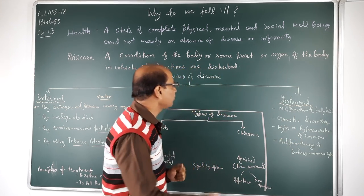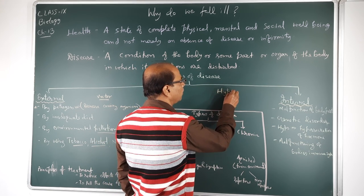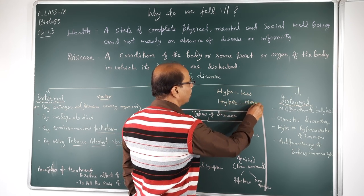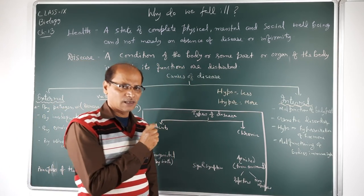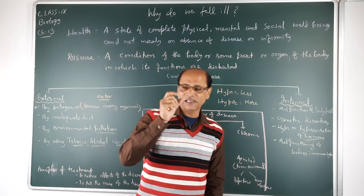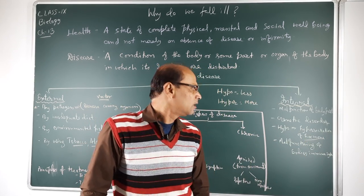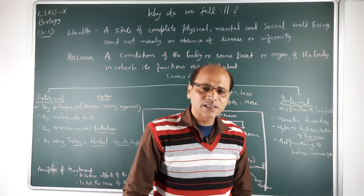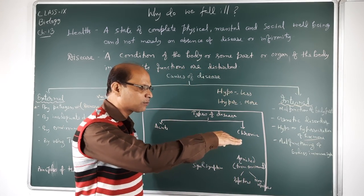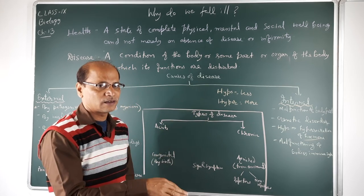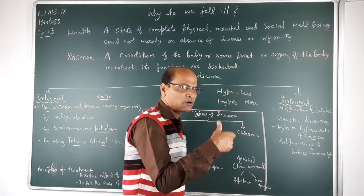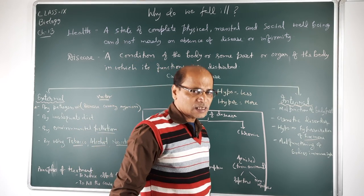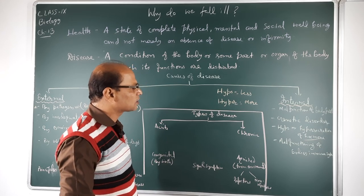The third internal cause is hypo or hyper secretion of hormones. Hypo means less, hyper means more — both are not proper, the secretion of hormones should be balanced. If growth hormone is hypo-secreted, the growth of the individual becomes retarded and they become a dwarf. If growth hormone is hyper-secreted, the person becomes very large in size — that is called gigantism. These are abnormalities due to hormonal imbalance.